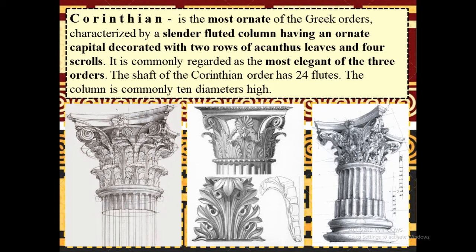Corinthian is the most ornate of the Greek orders, characterized by a slender, fluted column having an ornate capital decorated with two rows of acanthus leaves and four scrolls. It is commonly regarded as the most elegant of the three orders. The shaft of the Corinthian order has 24 flutes, and the column is commonly 10 diameters high.